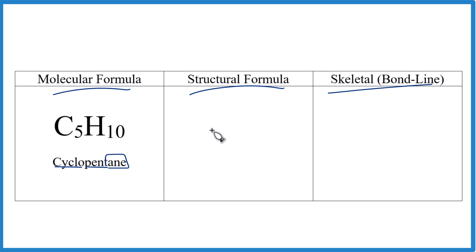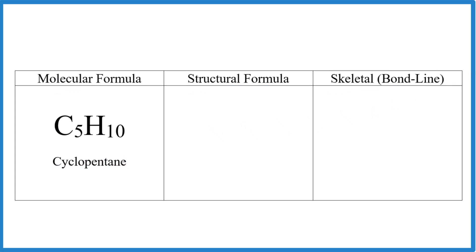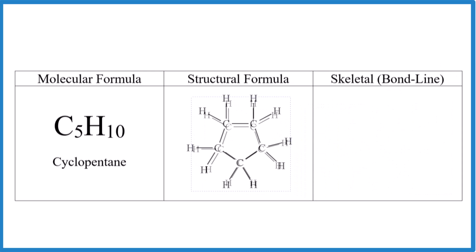So we need to draw five carbons in a ring. And that'll look something like this here. And note, each carbon has four bonds. This carbon here, one, two, three, four. Say this carbon here, one, two, three, four. So each carbon has four bonds.